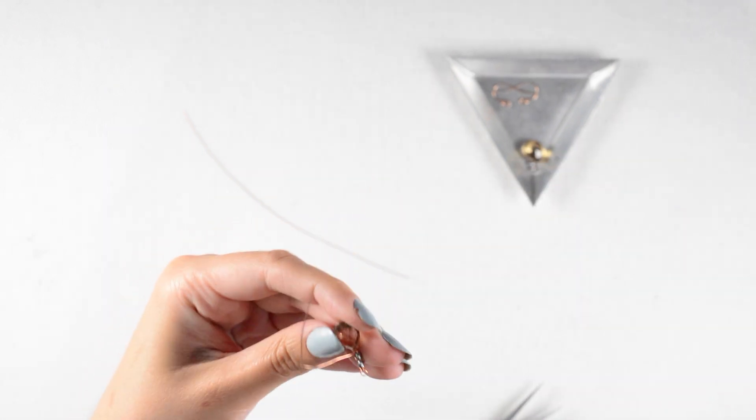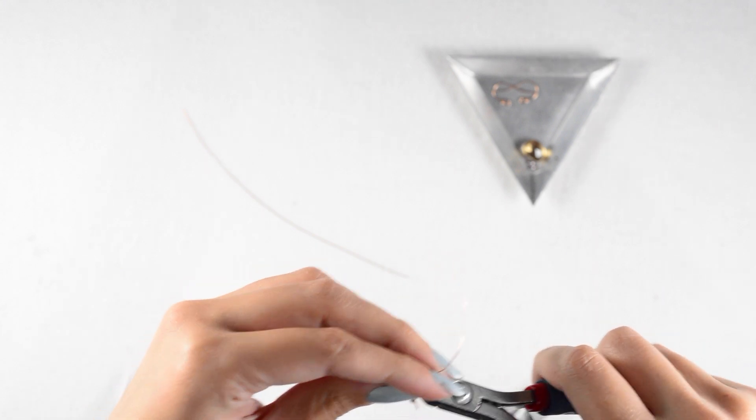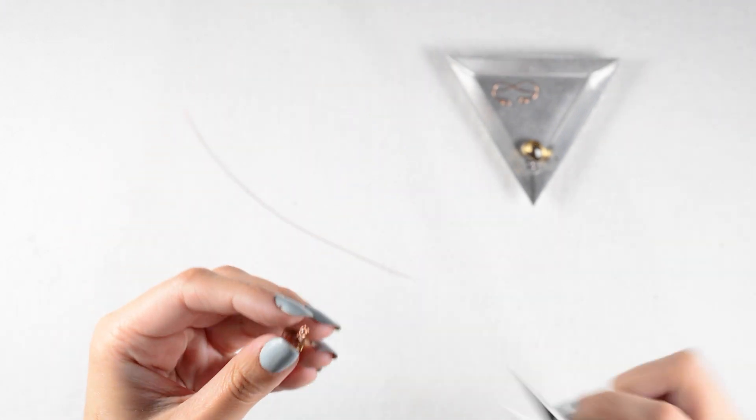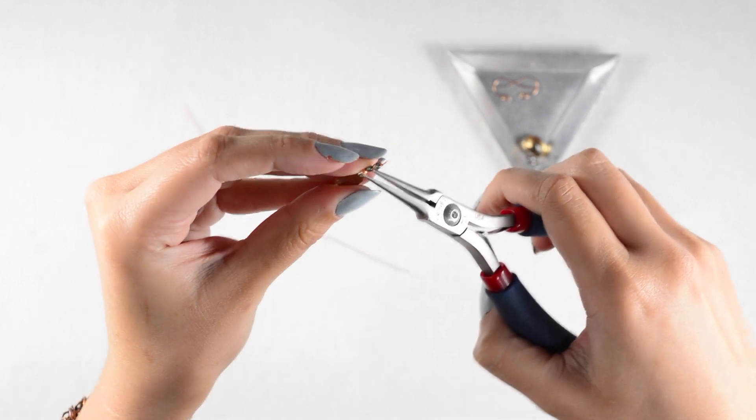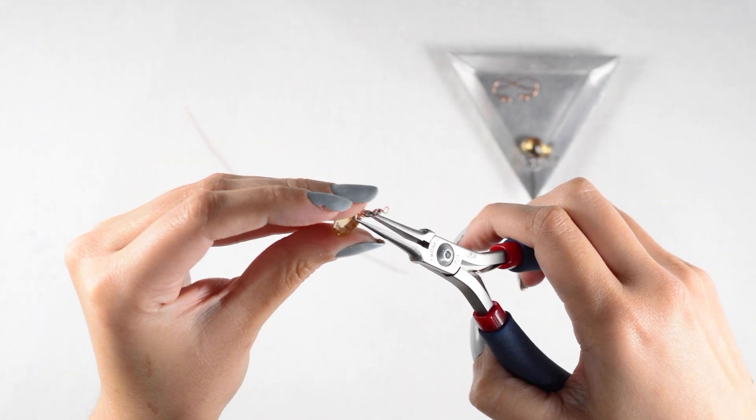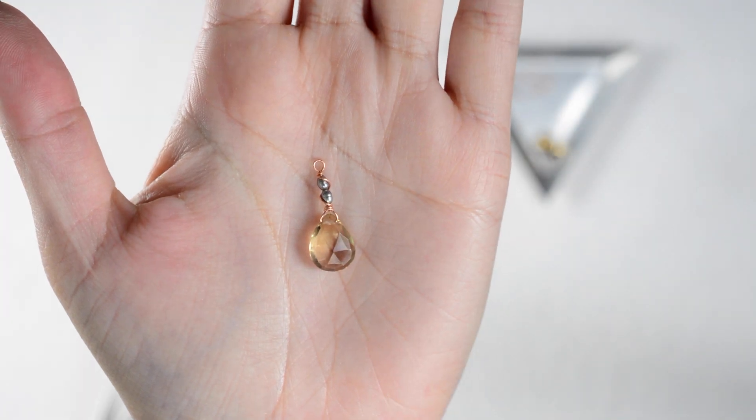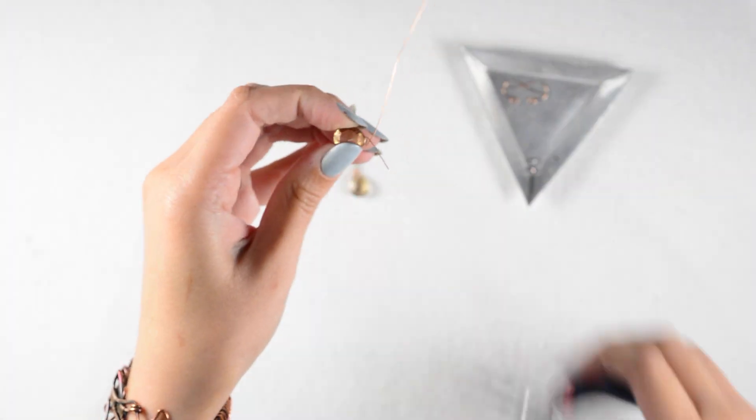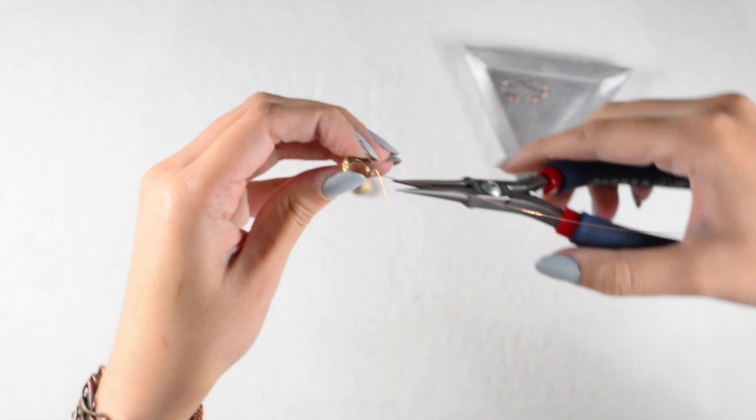Now I will cut off any excess wire and tuck that tail in as best as I can. And now you have your first wrap! I'm going to do my second earring almost identical to the first, up until my top loop and orbit.